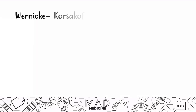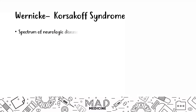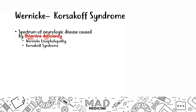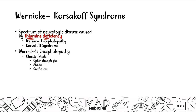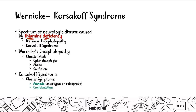Let's start with Wernicke-Korsakoff syndrome. It's a spectrum of neurologic diseases caused by thiamine deficiency. Wernicke's encephalopathy has a classic triad of ophthalmoplegia, ataxia, and confusion. Wernicke's typically presents first and then progresses to Korsakoff syndrome, which consists of amnesia — anterograde more likely than retrograde — confabulations, and personality changes.